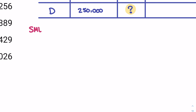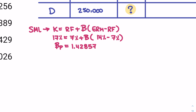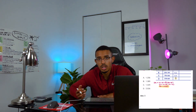Now let's use the SML to find the portfolio beta. The SML formula is: k = rf + β(ERM − rf). Plugging in: 17% = 7% + β × (14% − 7%). Solving this gives us a portfolio beta equal to 1.42857.